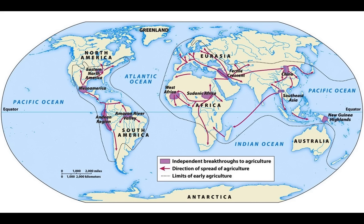As agriculturalists spread, hunter-foragers really had three options: they could join them, they could fight them, or they could flee them. Fighting wasn't very good because those kinship bands were very small, and agricultural societies sustained a much larger population. So as agriculture spread, it was pushing out hunter-foragers from these territories.